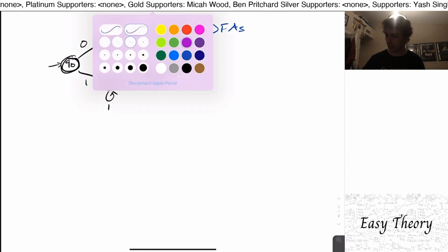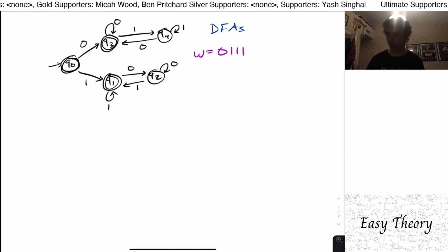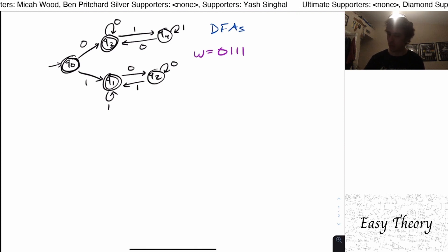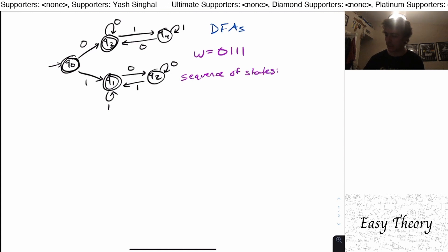So let's look at a particular string. So let's just say w equals 0, 1, 1, 1, just as an example. So what are the set of states that we actually get into in this machine? Well, we start in the start state. So the sequence of states that we go into, in this case, are q0, because we start there.